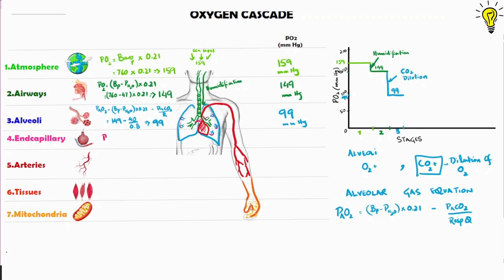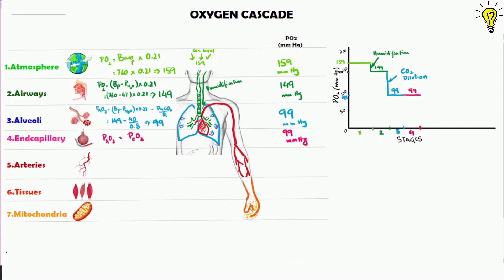Under normal conditions, the end capillaries devoid of Oxygen take up maximum Oxygen such that the alveolar and arterial Oxygen pressures equalise to 99 mmHg. We will discuss the role of transit time in more detail in the future.